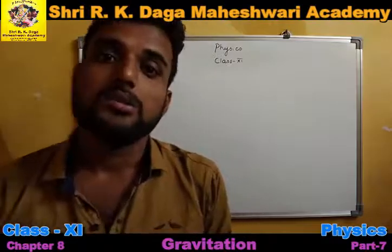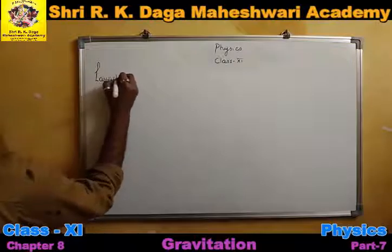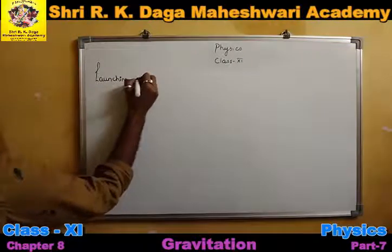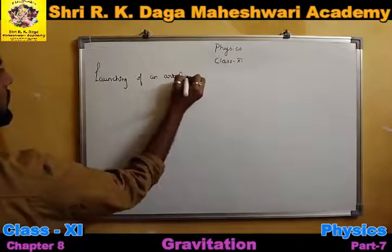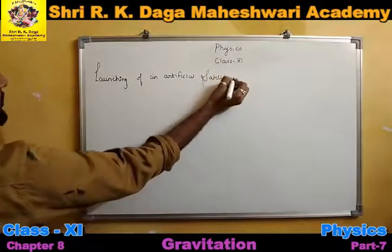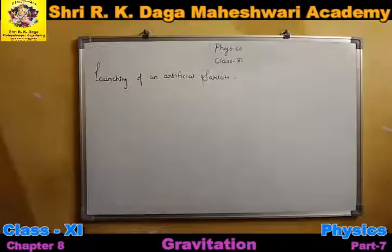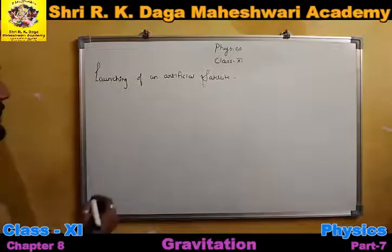Now we are going to start our next topic, that is the launching of an artificial satellite. How artificial satellites are launched, we will understand that. You have studied this in previous chapters as well as in class 9th in rocket propulsion. Here, just for revision purposes, we will discuss it because it is also part of this chapter.